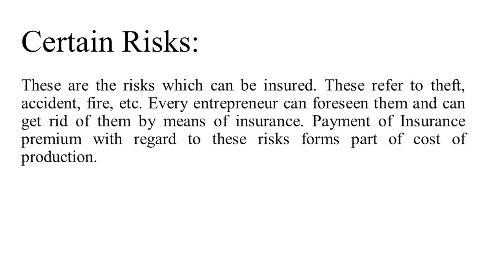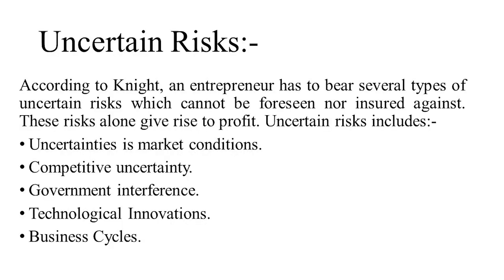Certain risks are insurable — these refer to theft, accident, fire, etc. Every entrepreneur can foresee them and get rid of them by means of insurance premium payments, which are regarded as part of the cost of production. Uncertain risks, according to Knight, include other risks which cannot be foreseen or insured — such as uncertainties in market conditions, competitive uncertainties, government interference, technological innovations, and business cycles. An entrepreneur gets profit only when he bears these uncertainty risks.